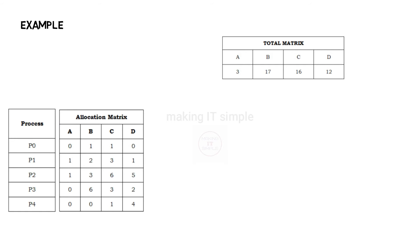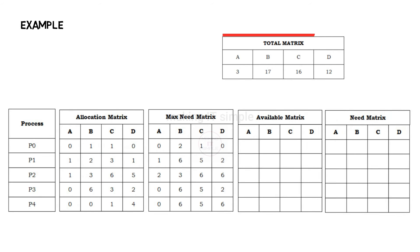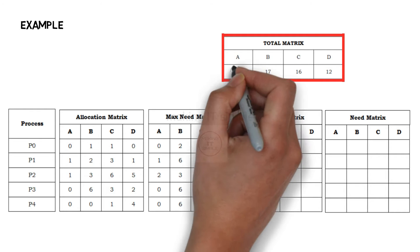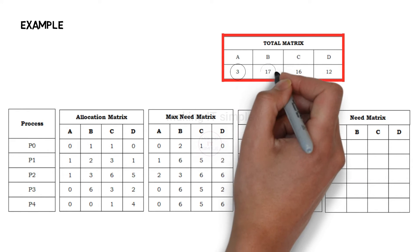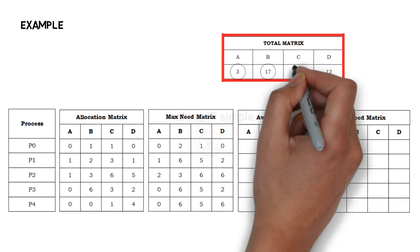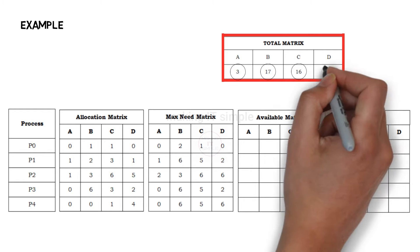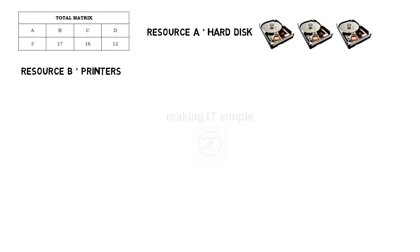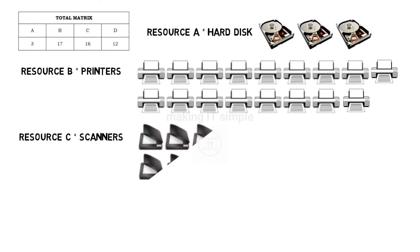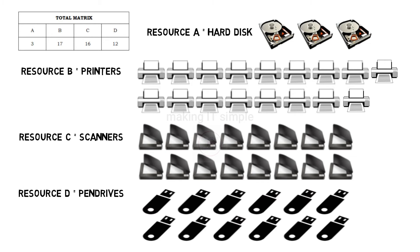Before starting to solve it, let's understand the problem statement. This is the total number of resources available in the system: we have 3 instances of resource A, 17 instances of resource B, 16 instances of resource C, and 12 instances of resource D. For example, we can say the system has 3 hard disks, 17 printers, 16 scanners, and 12 pen drives.